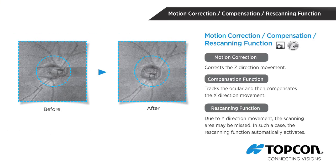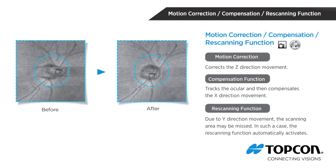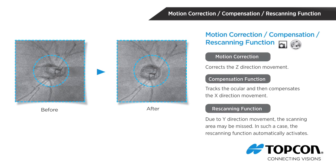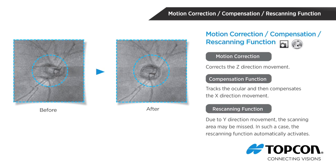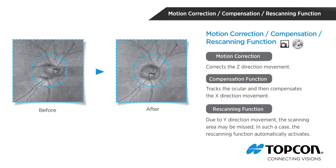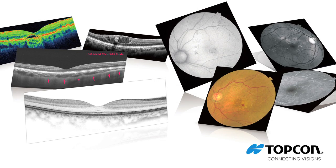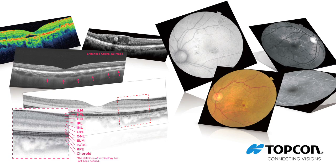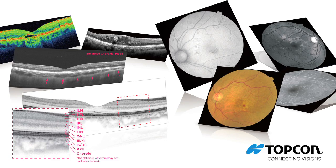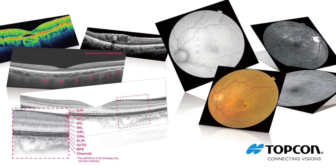The TopCon 3D OCT 2000 also comes standard with IR tracking and automatic motion correction software. If eye movement is detected during the scanning process, the 3D OCT will rescan the affected area. TopCon's enhanced choroidal mode visualizes further internal structures, allowing superior visualization of the RPE and choroidal area.